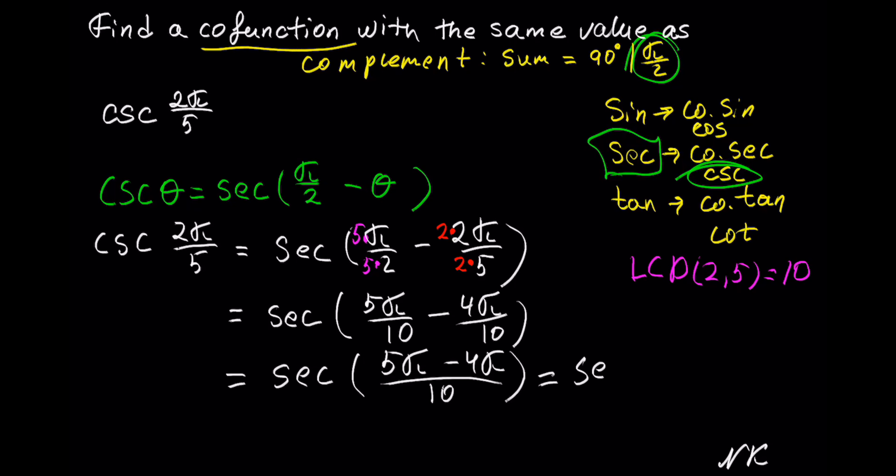We get secant of... out of 10. 5π minus 4π, we only have 1π left. So cosecant of 2π out of 5 is equal to secant of π out of 10.